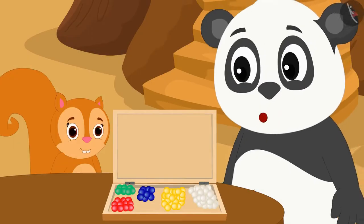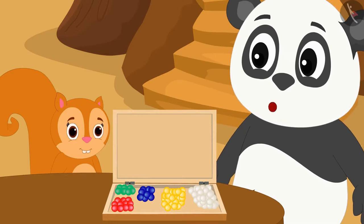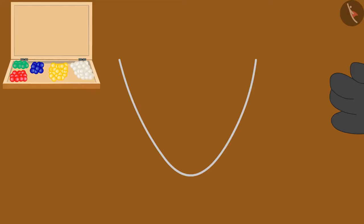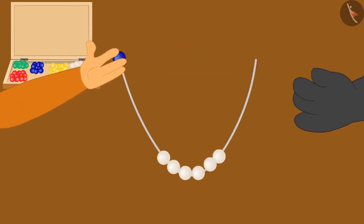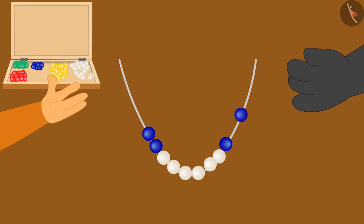Chanda liked Golu's suggestion very much. Now, Chanda and Golu together made a necklace of white and blue beads for uncle.